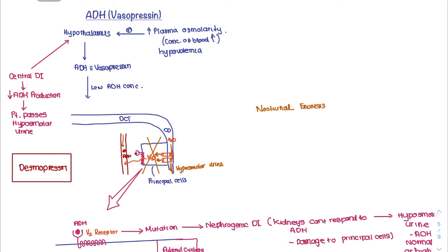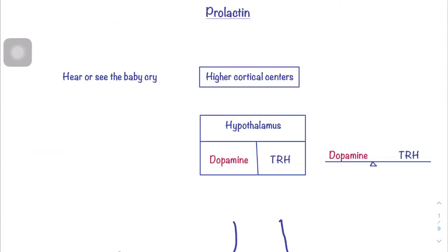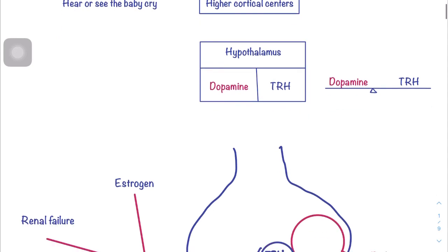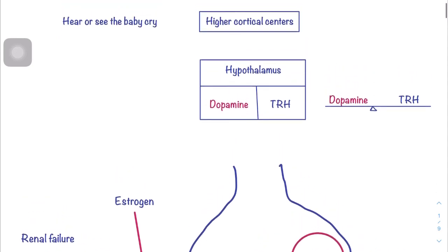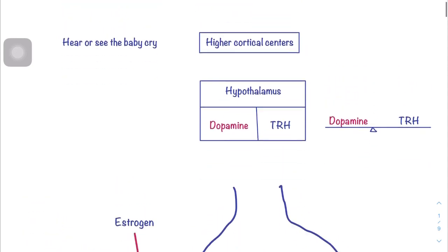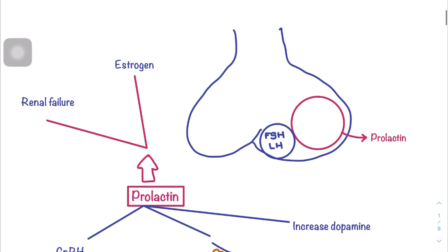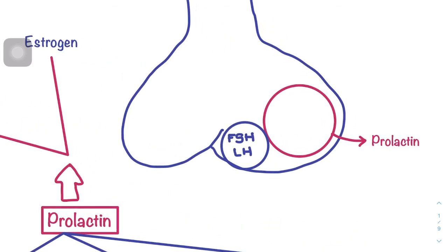Nocturnal enuresis means passing urine at night — waking up due to the need to urinate. Prolactin is synthesized and released from acidophilic cells in the anterior pituitary. It has a structure homologous to growth hormone.